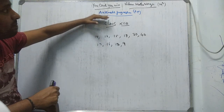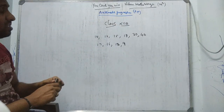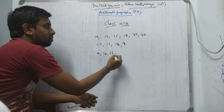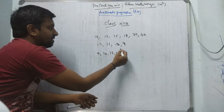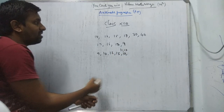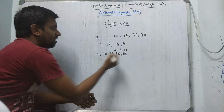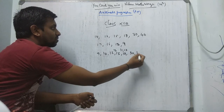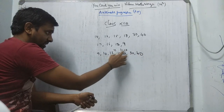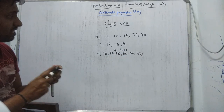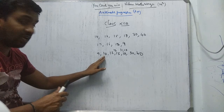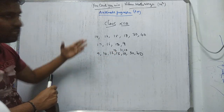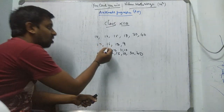Whether these marks form an AP or not. AP requires a continuous change — the difference between numbers must be the same. Now if I arrange in ascending order: 9, 10, 12, 13, 15, 16, 17, 18, 30, 40. Checking differences: 10 minus 9 is 1, 12 minus 10 is 2, 13 minus 12 is 1, 15 minus 13 is 2. There is no continuous process — the difference is not the same.